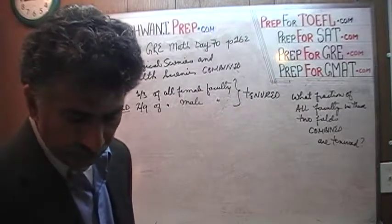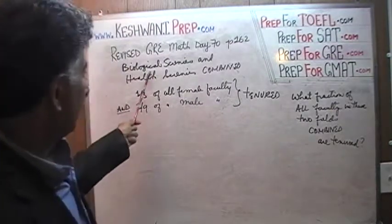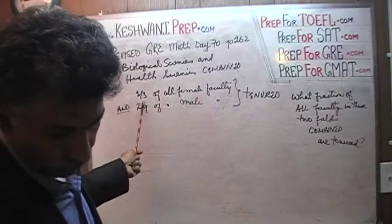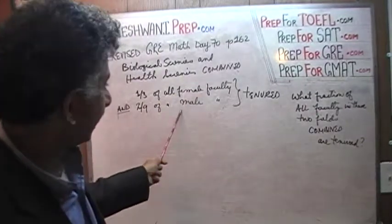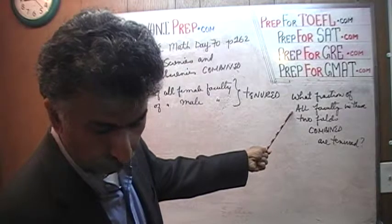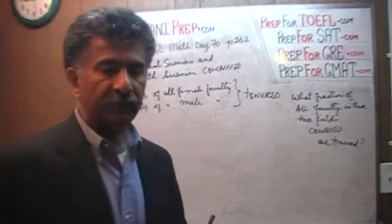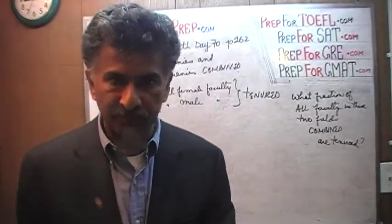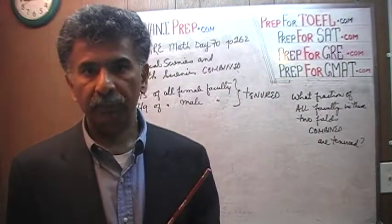Read the problem with me. It says: for biological sciences and health sciences faculty combined, one third of all female faculty and two ninths of all male faculty are tenured. The question is: what fraction of all faculty members in these two fields combined are tenured professors? We have to first find how many tenured professors there are in these two fields combined, then find the total faculty members, and just take the ratio.